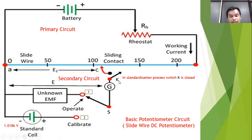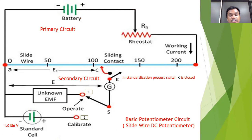Initially, the switch is at position one and the key switch is in open circuit condition. We have to standardize the potentiometer. Standardization is a main process in the potentiometer for measurement of unknown voltage. Standardization means converting the slide wire length — already we said it is 200 centimeters — into terms of voltage. That conversion is called standardization.